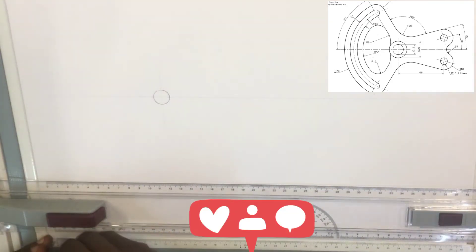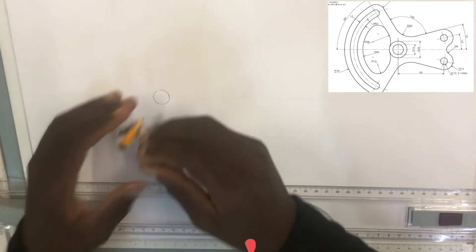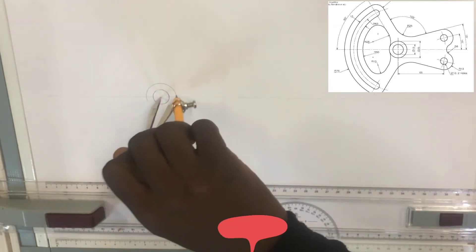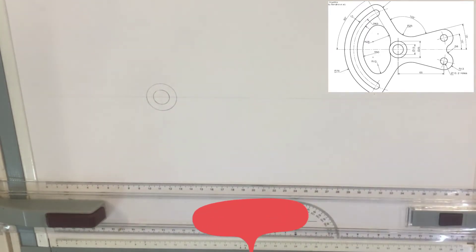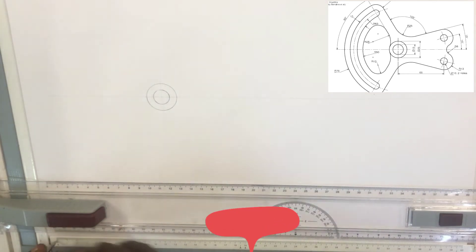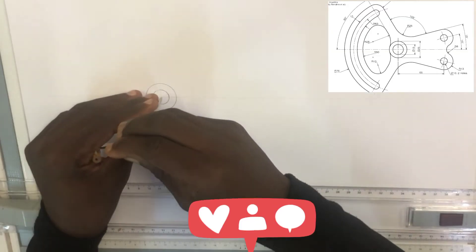Then also we have another circle of radius 13.5, and we're using the same center. Using the same center, we have to draw about three arcs. The first arc, which is the big arc, is of radius 76.